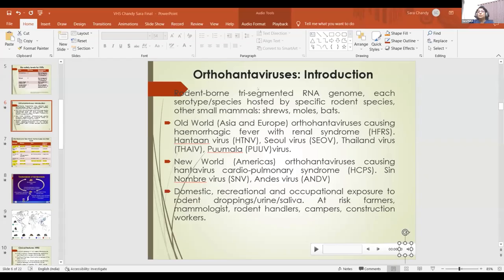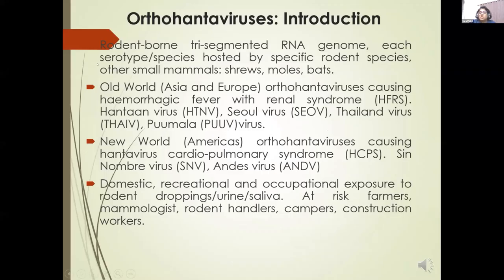Dr. Sara has rejoined. She introduces orthohantiviruses: these are rodent-borne, and each different serotype is hosted by a specific rodent species. There are other orthohantiviruses hosted by small mammals like shrews, moles, and bats. Basically there are two kinds: old world orthohantiviruses, discovered during the Korean War in 1950, and new world orthohantiviruses, discovered in 1993. Old world orthohantiviruses cause hemorrhagic fever with renal syndrome (HFRS), with four or five important viruses in this group. New world hantaviruses cause hantavirus cardiopulmonary syndrome (HCPS), with Sin Nombre and Andes viruses causing very severe disease.